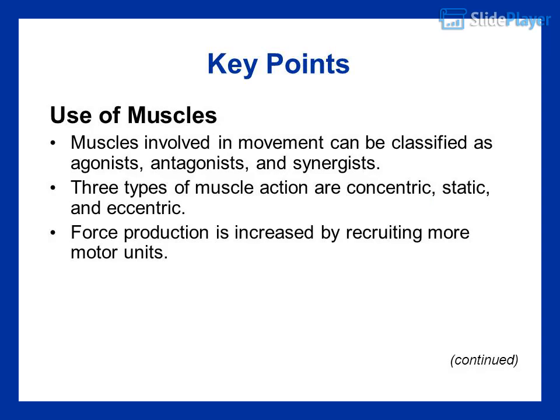Key points — use of muscles: muscles involved in movement can be classified as agonists, antagonists, and synergists. Three types of muscle action are concentric, static, and eccentric. Force production is increased by recruiting more motor units.